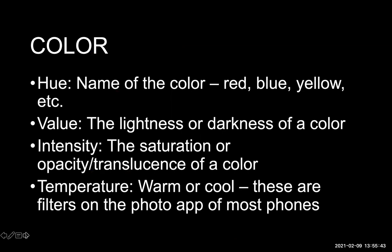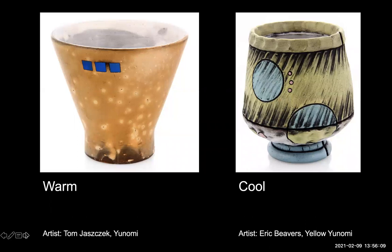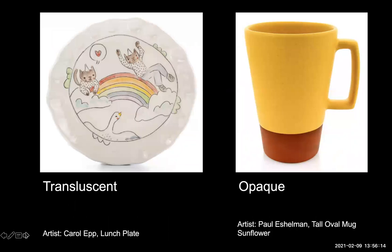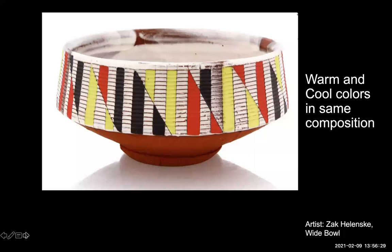Color. The hue is the name of the color — red, blue, yellow, purple, etc. Value is the lightness or darkness of a color: how much black or white has been introduced. Intensity is the saturation or opacity of a color. Temperature is warm or cool — these are often filters on phone apps. The cup on the left employs warm colors, tan brown and electric blue, while the cup on the right utilizes a cooler spectrum. The plate on the left utilizes a transparent glaze over a translucent color application; you can see brush strokes through various degrees of saturation. The cup on the right is opaque with no range of saturation. The artist employs contrasting warm and cool color palettes — warm reds, browns, and matte clay juxtaposed by cool blue, green, and yellow stripes. The warm red stripes provide continuity between the two contrasting elements.